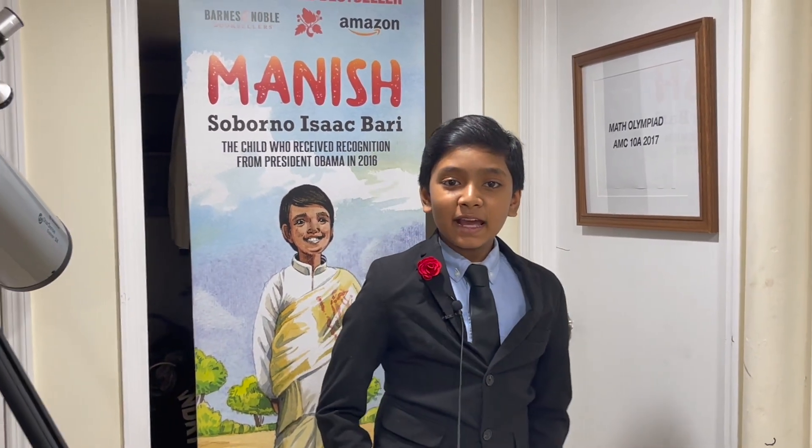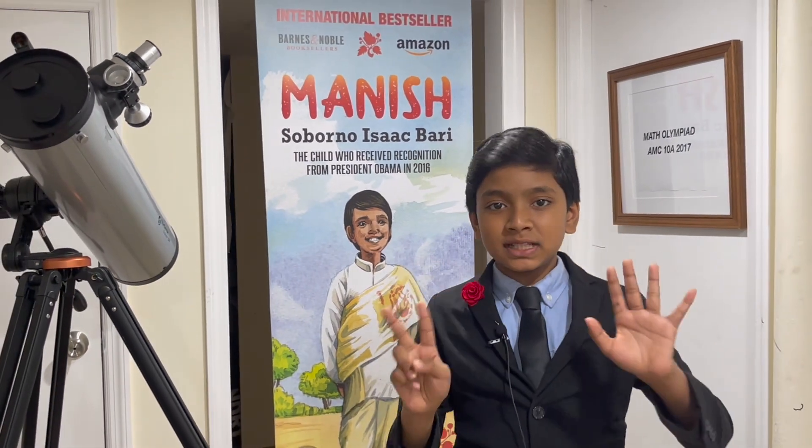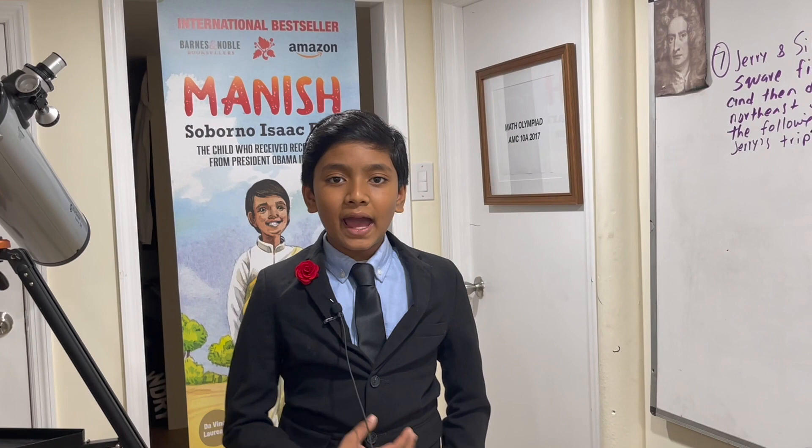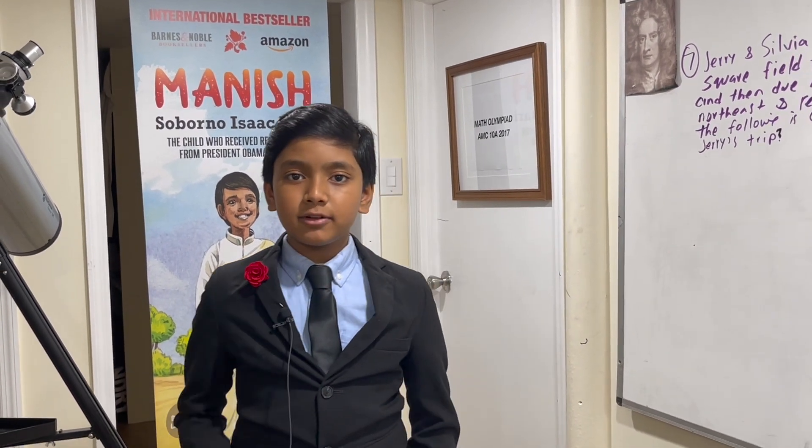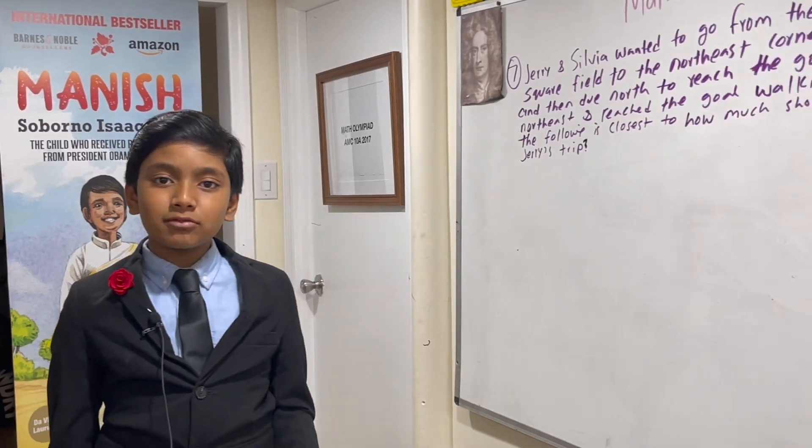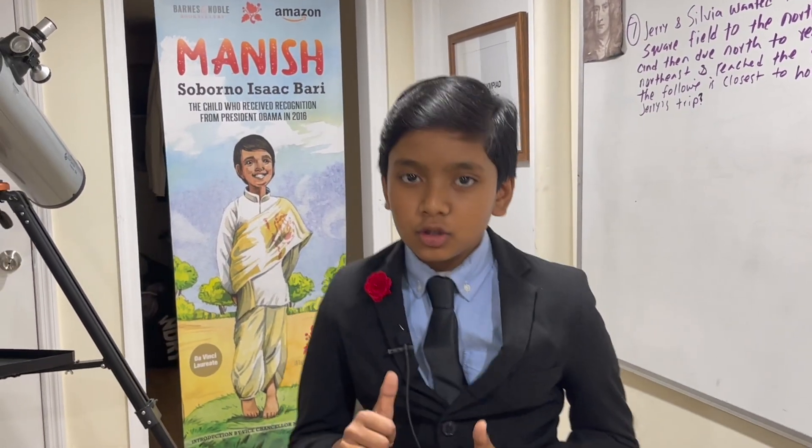Hello everybody, my name is Soborno Isaac Bari from Bari's Science Lab, and today we're doing AMC problem number seven. We're going to be figuring out what the difference between Jerry and Sylvia's trip is as they walk from the southwest to the northeast corner of a field.